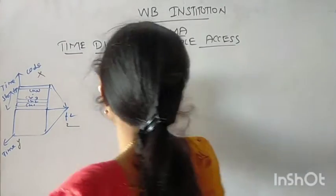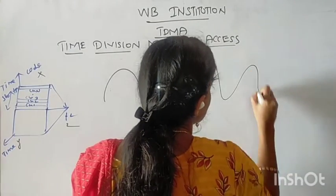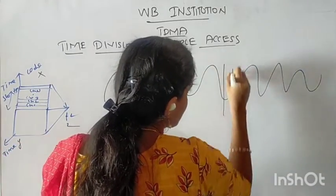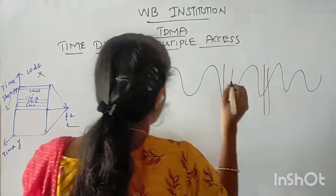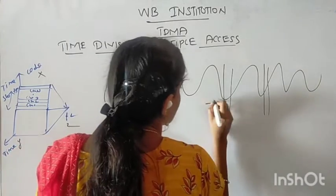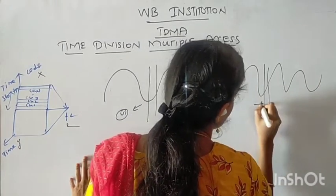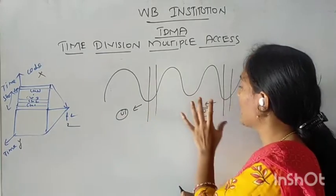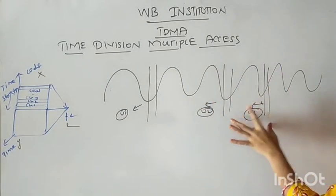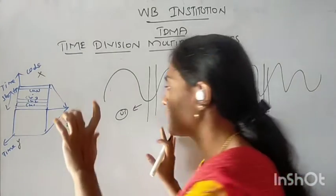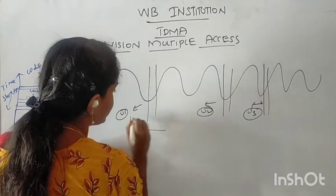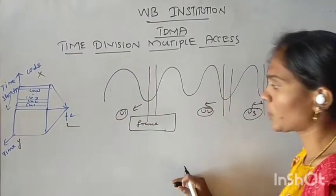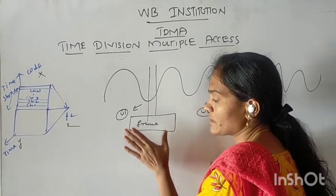For example, consider this is a radio spectrum. Some set of frequencies are divided. Here is user 1, and this set of frequencies is user 2, and this set of frequencies is user 3. So user 1 has information 1 — that is the frame. Frame information 1, message 1. User 1, in the frame set of frequencies, sends message 1.